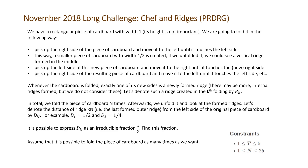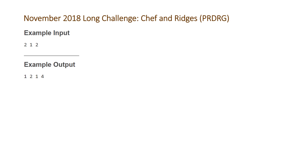It is possible to express dn as an irreducible fraction x divided by y — find this fraction. Assume that it is possible to fold a piece of cardboard as many times as we want. The constraints are up to 5 test cases t, and n will be up to 25 folds. The two test cases are 1 and 2, and the outputs are 1 2 and 1 4, meaning the distance after n folds has numerator 1 and denominator 2 for the first case, giving ½, and ¼ for the second.